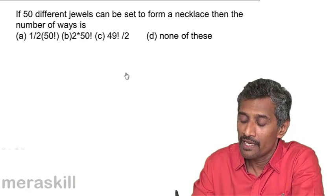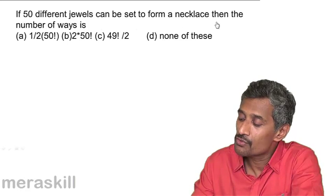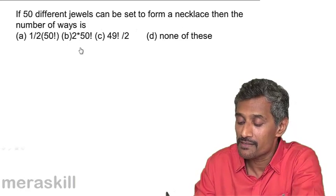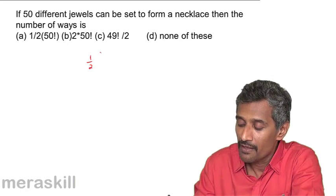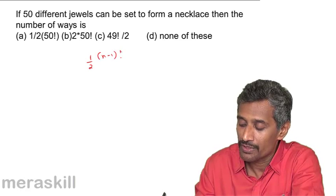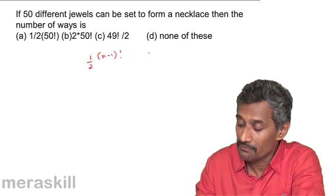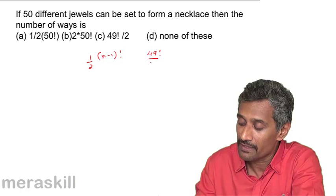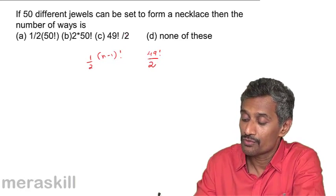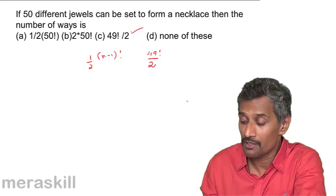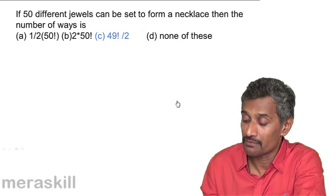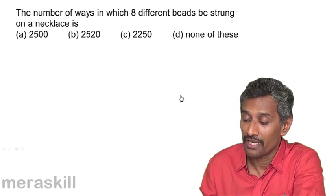Say for example, if 50 different jewels can be set to form a necklace, the number of ways is going to be (n-1)!/2. So it's going to be (50-1)! that is 49!/2. So which is going to be this particular option, 49!/2.